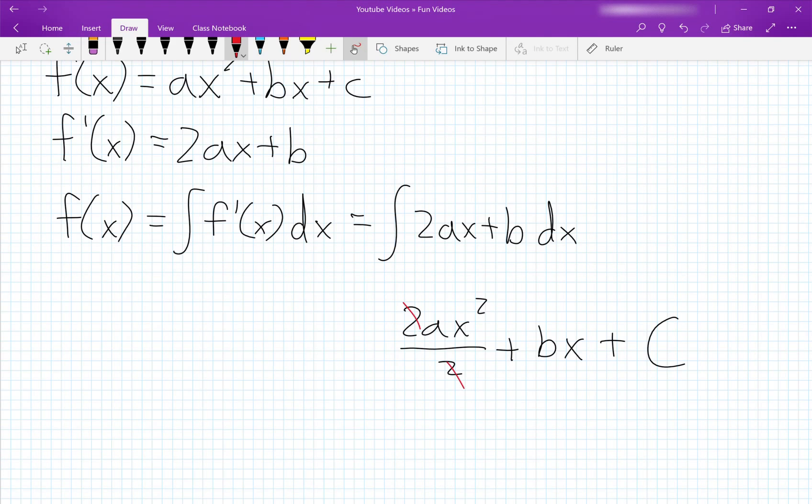We get 2ax squared over 2 plus bx and then we have to add the constant of integration. The 2's cancel each other out and we have ax squared plus bx plus c, which is our original equation, and that's not exactly helpful.